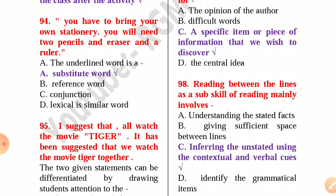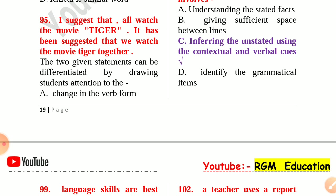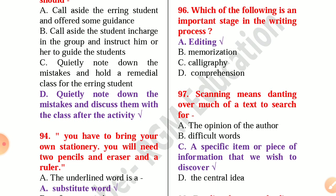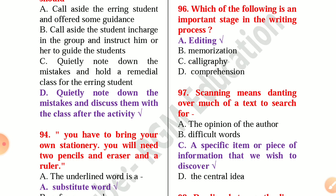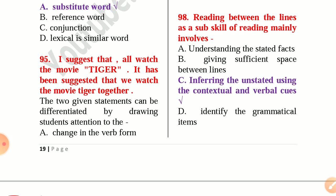Question 94: 'You have to bring your own stationery. You will need two pencils, an eraser and a ruler.' Substitute word. Question 95: 'I suggest that all watch the movie Tiger' vs. 'It has been suggested that we watch the movie Tiger together.' The two sentences can be differentiated by drawing students' attention to the roles of the subject and object in both sentences. Question 96: An important stage in the writing process is editing. Question 97: Scanning means glancing over much of a text to search for a specific item or piece of information. Question 98: Reading between the lines mainly involves inferring the unstated using contextual and verbal clues.